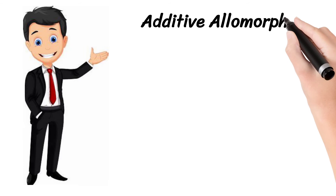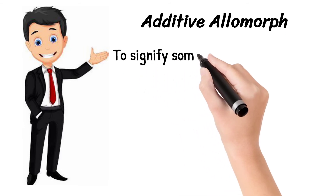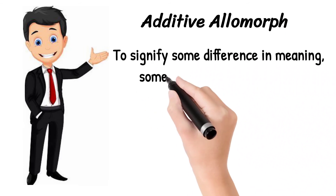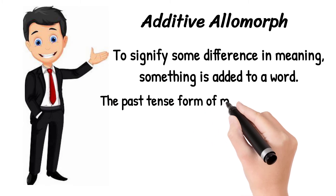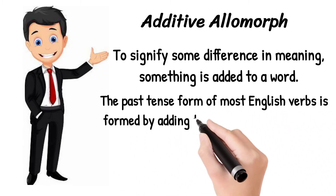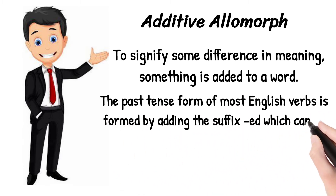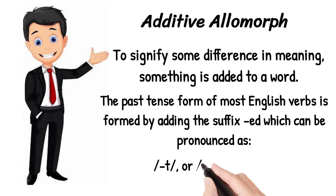What are additive allomorphs? Additive allomorphs are used to signify some difference in meaning — something is added to a word. The past tense form of most English verbs is formed by adding the suffix -ed, which can be pronounced as /t/, /d/, or /ɪd/. The term 'additive' is self-explanatory: something is added to a word in order to show some difference in meaning.